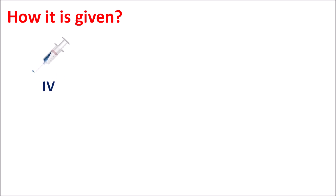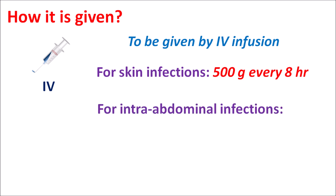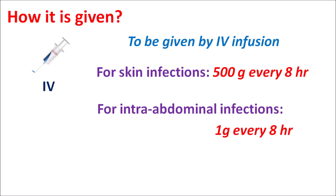Meropenem is given by slow IV infusion to avoid inflammation at the site of injection. The dose depends on the type of clinical indication. For skin infections it is given at 500 mg every eight hours, whereas for intra-abdominal infections and bacterial meningitis it is given at 1 gram every eight hours. These are adult dosages; for pediatric patients the dose depends on body weight and other conditions.